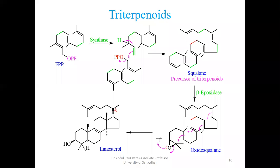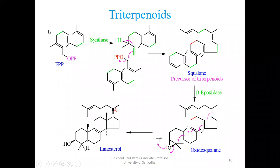Triterpenoids are biosynthetically synthesized into pentacyclic structures. They are 30-carbon containing compounds, basically being synthesized from 15-carbon units that we commonly call farnesyl pyrophosphate. So farnesyl pyrophosphate — this is the key difference.